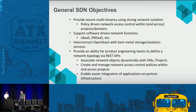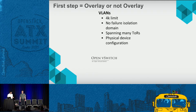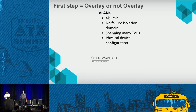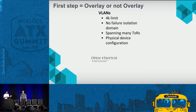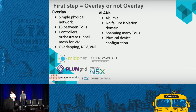The critical decision points: first, you need to decide if you want to use overlay or not. If you start with VLANs there's a limit of 4,000 VLANs — I know it's a lot for some environments, but most big customers have issues with this. There's no failure isolation domain, it's difficult to manage, and companies are separated into departments. When you need new VLANs it's difficult to orchestrate bare metal devices, so VLANs are complicated.